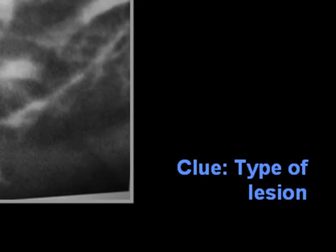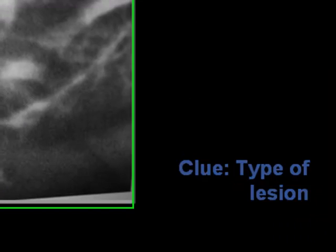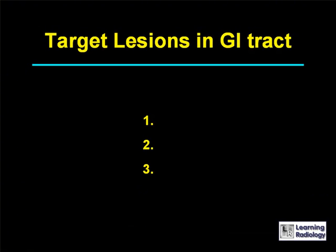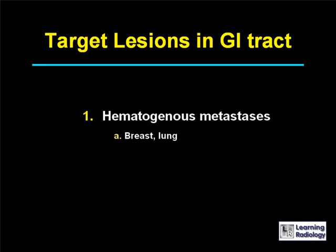The next differential diagnosis is for a target lesion in the GI tract. There are three main causes: hematogenous metastases from breast and lung, Kaposi sarcoma, and melanoma.